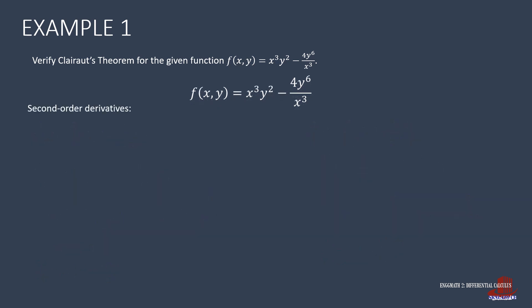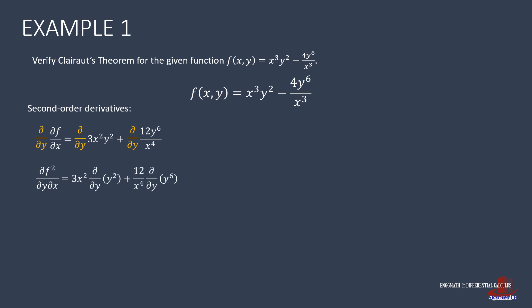With both first-order derivatives already determined, we move to the second order. From the first partial derivative with respect to x, we take its derivative with respect to y — giving us the second partial derivative of f with respect to y and x. We get 3x squared times the derivative of y squared plus 12 over x raised to 4 times the derivative of y raised to 6, which becomes 3x squared times 2y plus 12 over x raised to 4 times 6y raised to 5. So the second partial derivative of f with respect to y and x is 6x squared y plus 72y raised to 5 over x raised to 4.